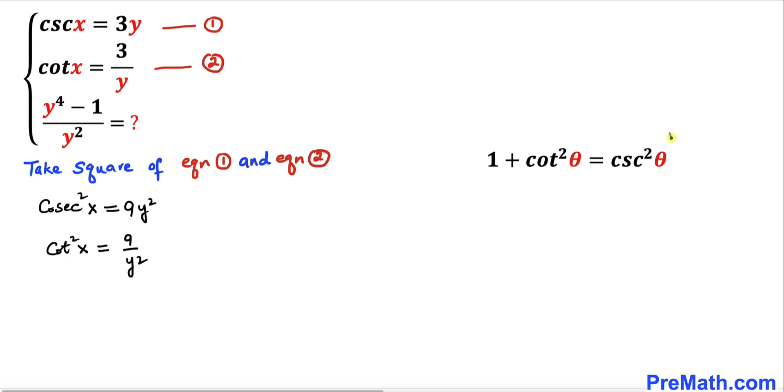Now let's recall this famous trigonometric identity: 1 plus cotangent squared theta equals cosecant squared theta. Let me move this cotangent squared theta to the right hand side. That means we are going to get 1 equals cosecant squared theta minus cotangent squared theta.